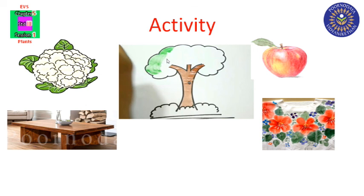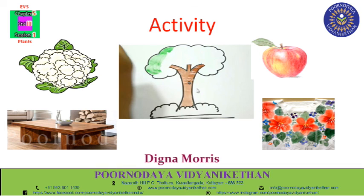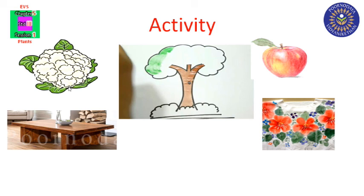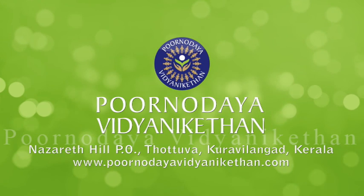Next is an activity. You have to stick or draw pictures of plants and things we get from plants. Plants give us fruits, clothes, wood, and vegetables. I hope you understand this chapter and will do the exercise. Try to plant a tree for a better future. Home task: read the text three times, do the activity, do the exercise in the textbook, and write answers in your notebook. See you in the next class. Thank you.